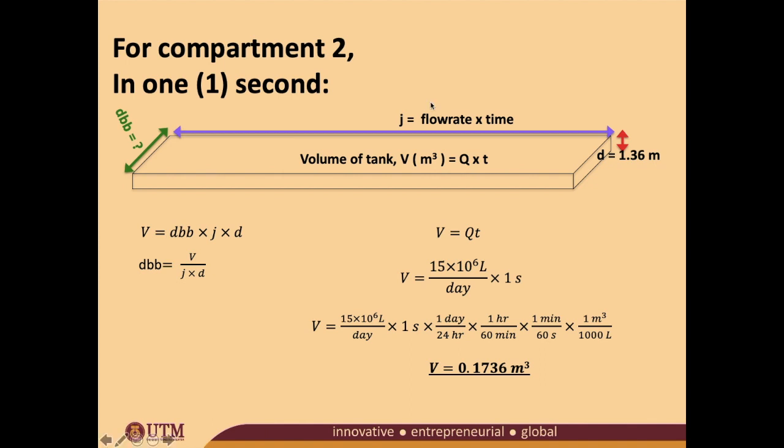Since the second flow rate was 0.18 if I'm not mistaken, therefore J now becomes 0.18 meters. So with that, can I proceed to the next line? Right, so we have already got our J. As usual, trying to find out our DBB.